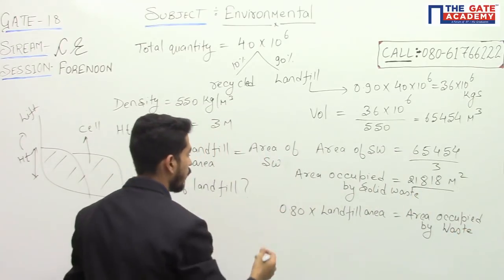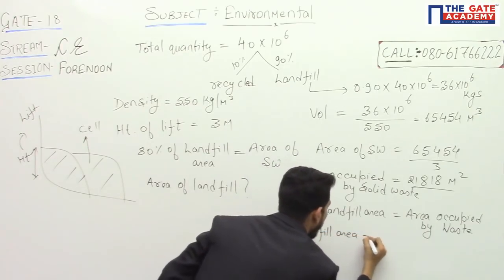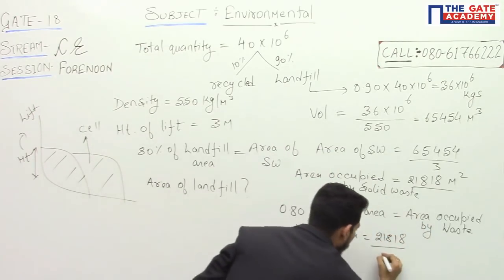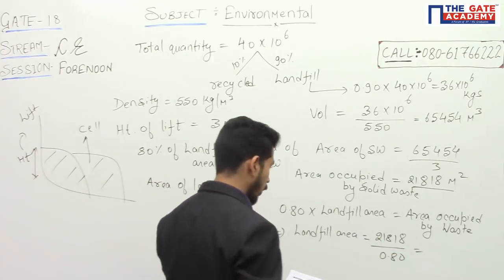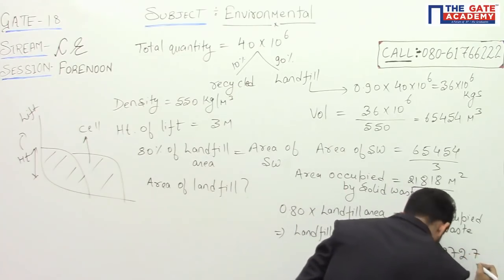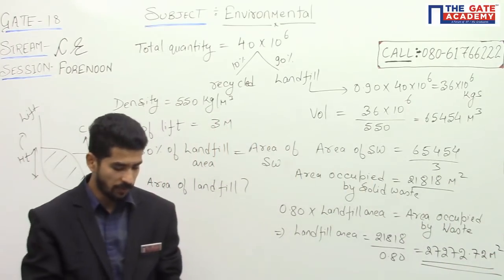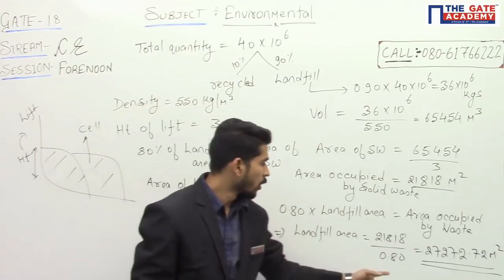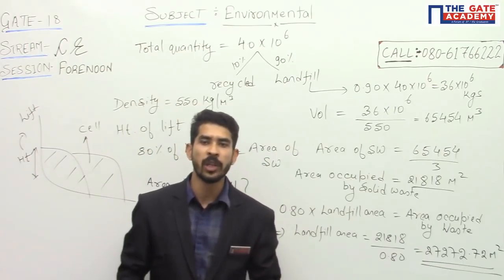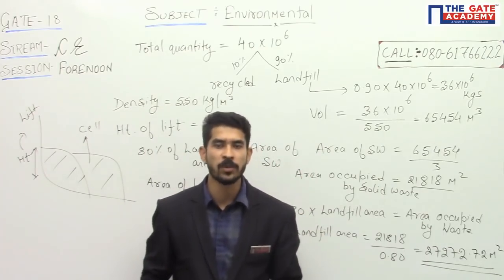Therefore, landfill area = 21,818 ÷ 0.8, which equals 27,272.72 m². So the area of landfill required for this particular solid waste is 27,272.72 meter square. This is a memory-based question. If you have any doubt in the question or the solution, kindly contact us on the number displayed on the board. Thank you.